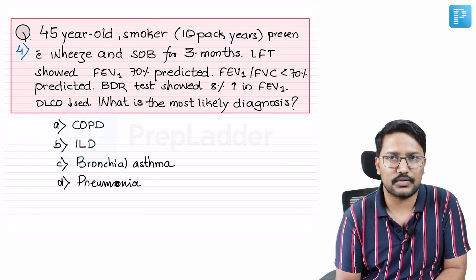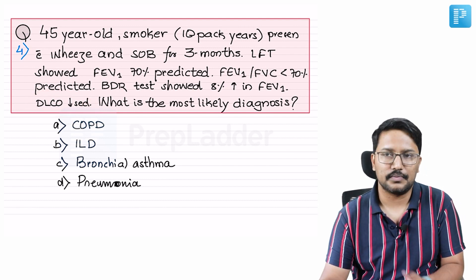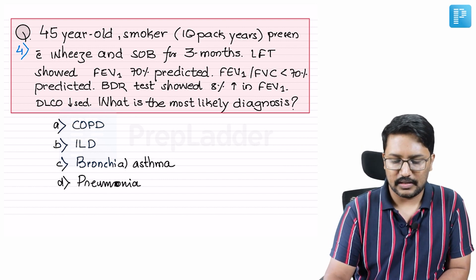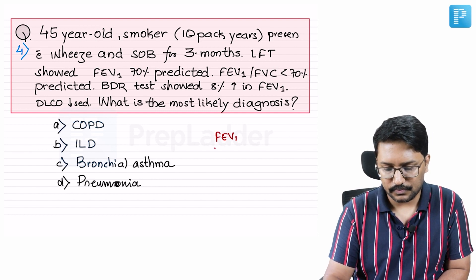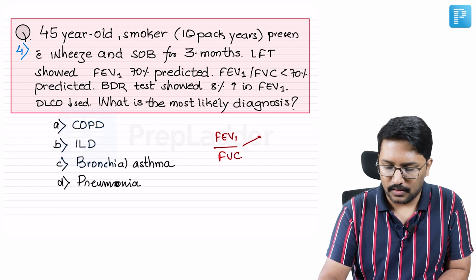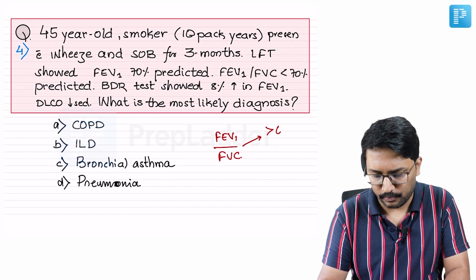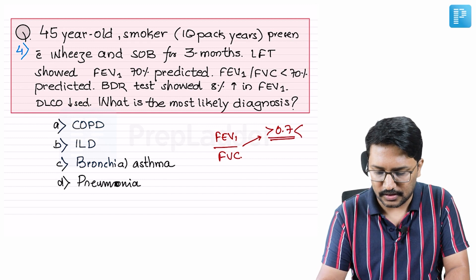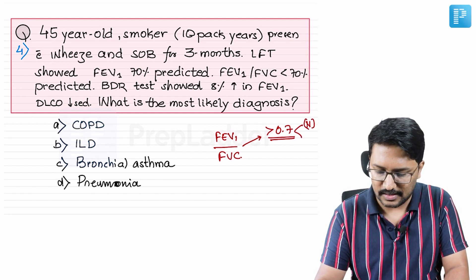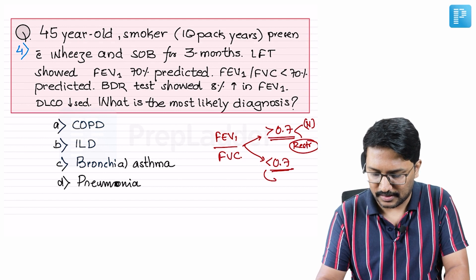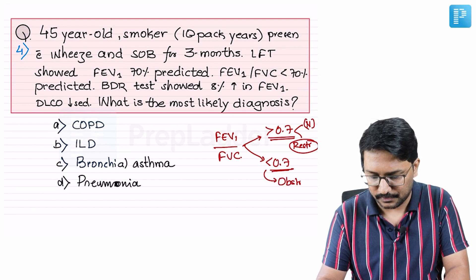The question asks for the most likely diagnosis. Whenever we have respiratory patients, the most important thing is to distinguish between obstructive versus restrictive lung disease. For that, we look at the FEV1/FVC ratio. If this ratio is more than 0.7 in a suspected lung disorder, it suggests either the patient is normal or has a restrictive lung disorder. On the other hand, if it is less than 0.7, it is suggestive of obstructive lung disorder.